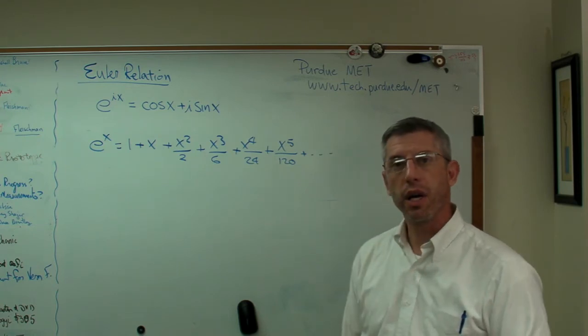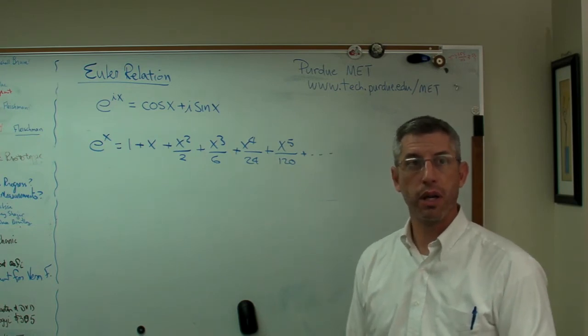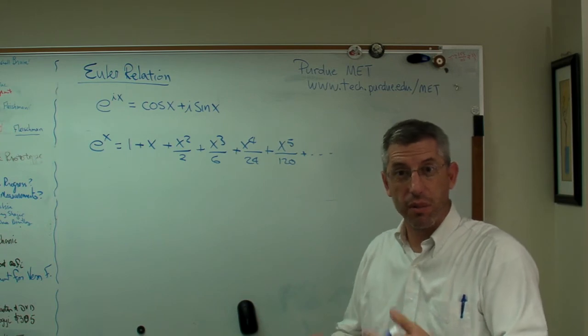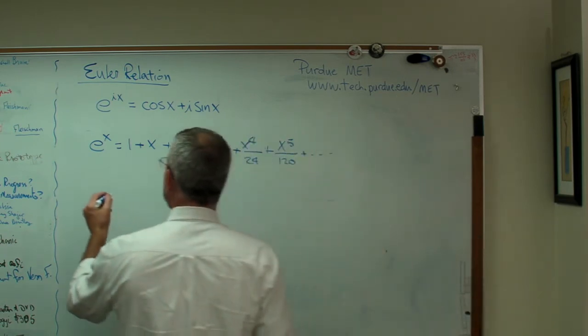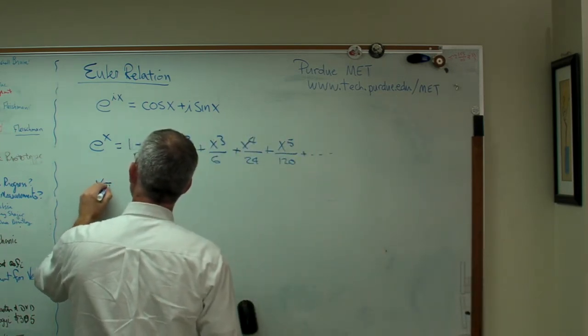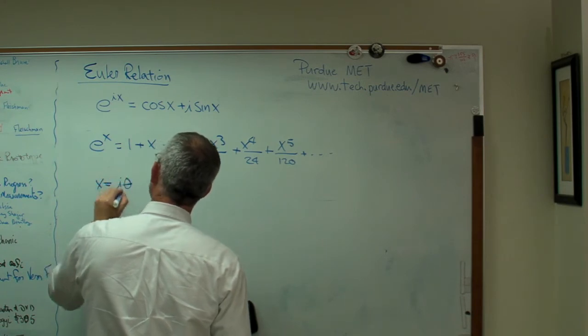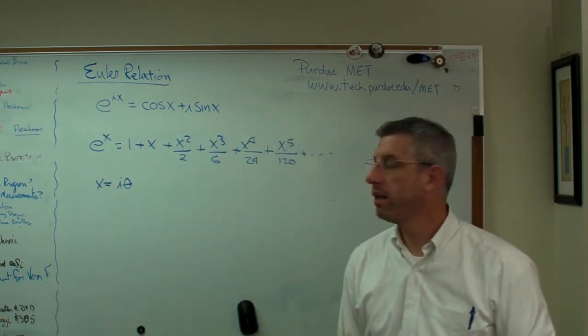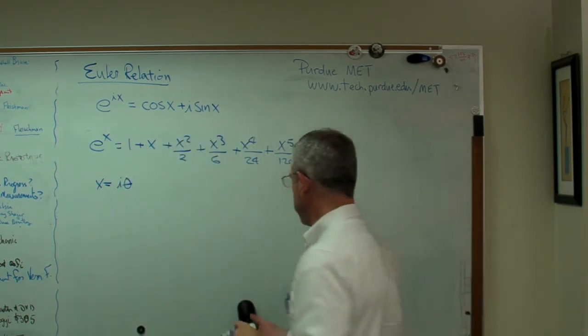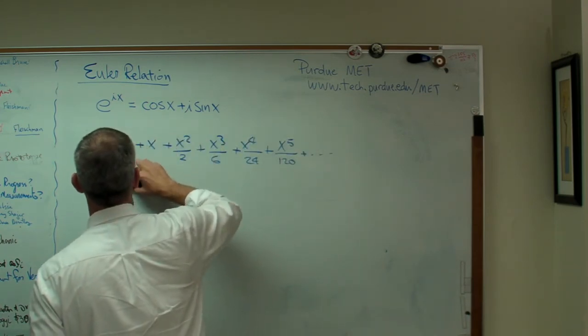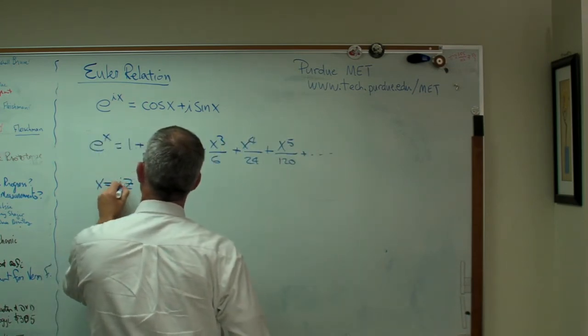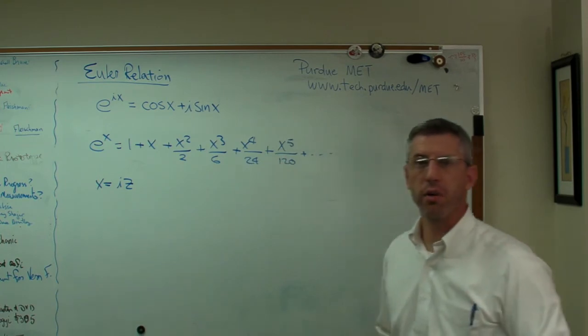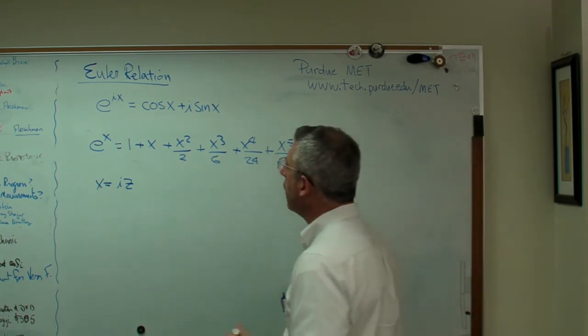He had this insight. He was one of the first to treat complex numbers as real legitimate mathematical entities. So he said, what if I do this? What if I say x equals i theta, or iz. I just need a variable that isn't x, so I'll call it z.